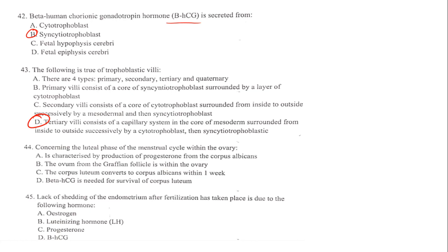Concerning the luteal phase of the menstrual cycle within the ovary: it is characterized by production of progesterone from the corpus luteum. The ovum from the Graafian follicle is within the ovary. The corpus luteum converts within one week. The answer is B — beta-hCG is needed for survival of the corpus luteum. Lack of shedding of the endometrium when fertilization has taken place is due to the presence of progesterone.